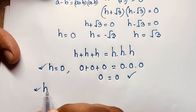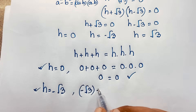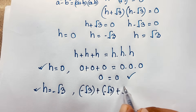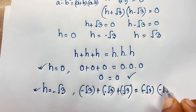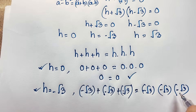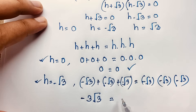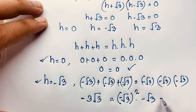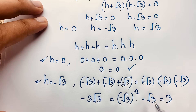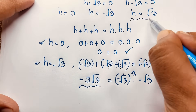For h equals negative √3: on the left, minus √3 plus minus √3 plus minus √3. On the right, minus √3 times minus √3 times minus √3. The left side gives minus 3√3. On the right, minus times minus is plus, giving (√3)² times (minus √3), which is 3 times minus √3, equaling minus 3√3. So left hand side equals right hand side — this is also a correct answer.